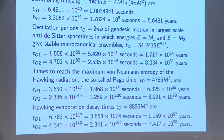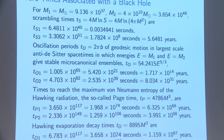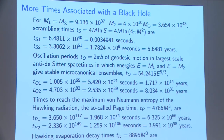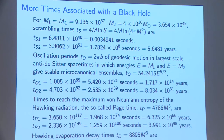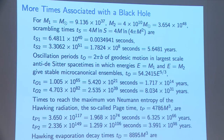The scrambling time is the light crossing time times the log of S. Hayden and Preskill showed that if you know all quantum information that came out of the black hole up to some time, and someone feeds in new information, the time to decode that new information is also of order the scrambling time. For a solar-mass black hole, that's about three milliseconds; for the 40-billion solar mass black hole, it's about 5.6 years — larger than the four-and-a-half-day light crossing time by this log factor.